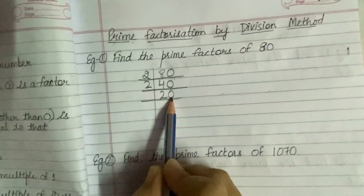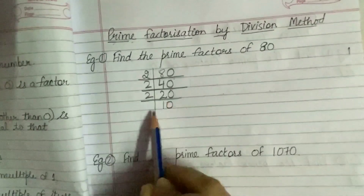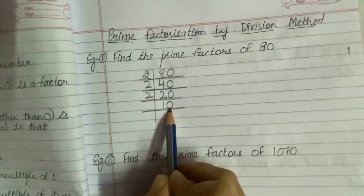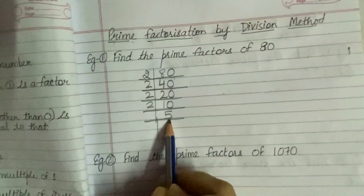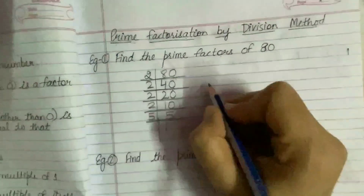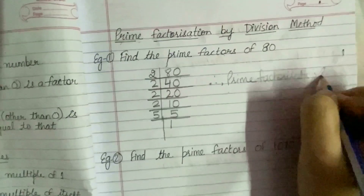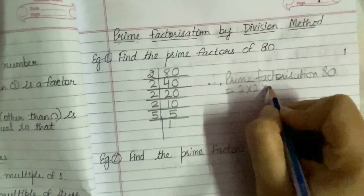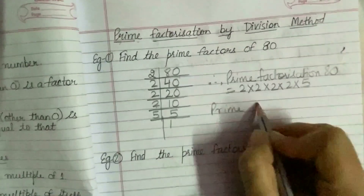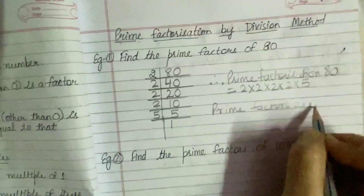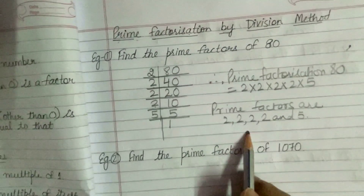Again, this 10 is divisible by 2. We write 2 and the quotient is 5, because 2 times 5 equals 10. This 5 is coming in the table of 5 only, so we write 5, and 5 times 1 equals 5. Therefore, the prime factorization of 80 equals 2 × 2 × 2 × 2 × 5, and the prime factors are 2, 2, 2, 2, and 5. Hopefully, example number 1 is clear to you.